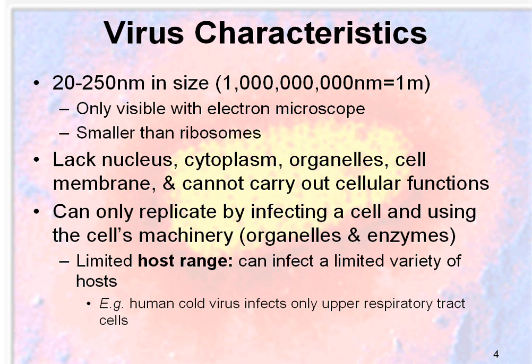They have a really limited host range — they can infect only a limited variety of hosts. For example, the human cold virus infects only the upper respiratory tract cells, but no other cells.